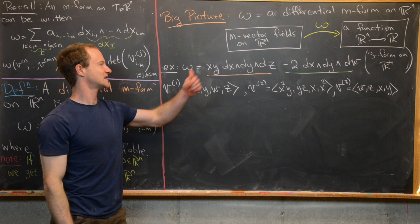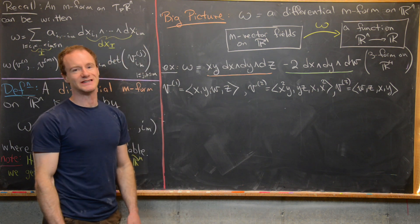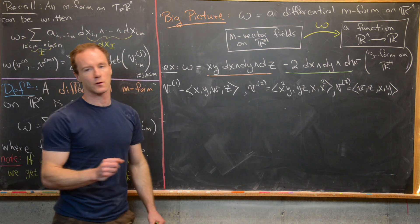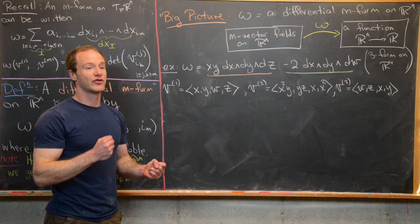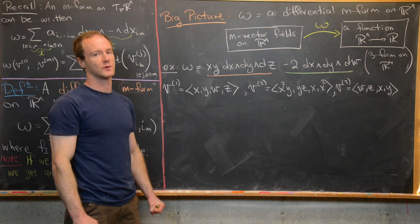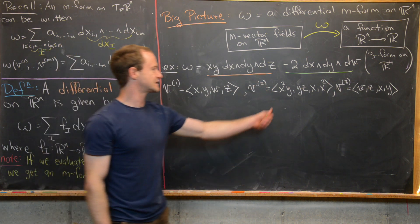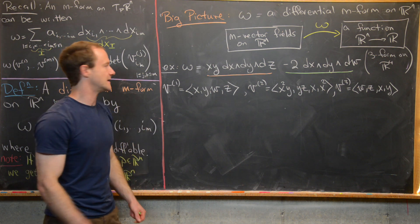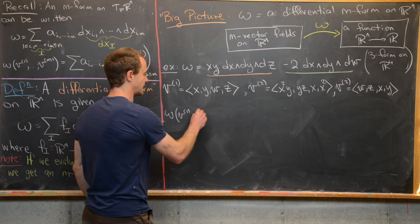Let's look at a larger example. Let omega = xy dx ∧ dy ∧ dz − 2 dx ∧ dy ∧ dw, viewed as a 3-form on R⁴ with variables ordered x, y, z, w. Since this is a 3-form on R⁴, it accepts three different four-dimensional vector fields. Let V^1 = (x, y, w, z), V^2 = (x², y, z, x²) — wait, (x², y, y, z, x) — and V^3 = (w, z, x, y). We'll evaluate omega at these three vector fields.